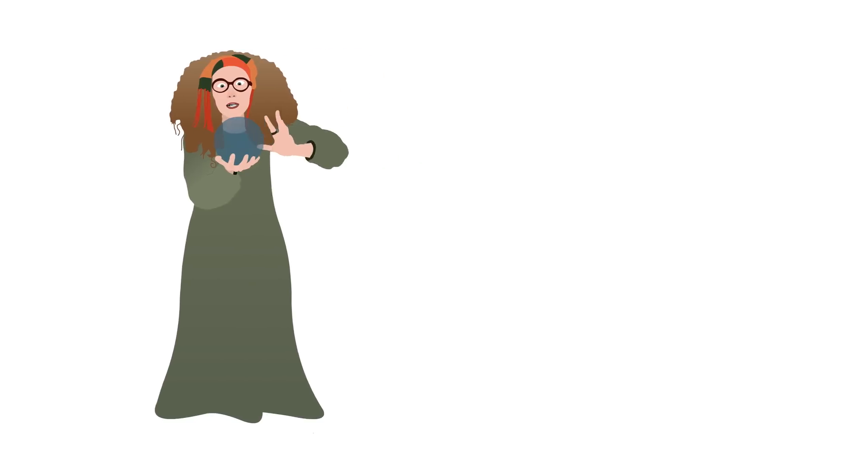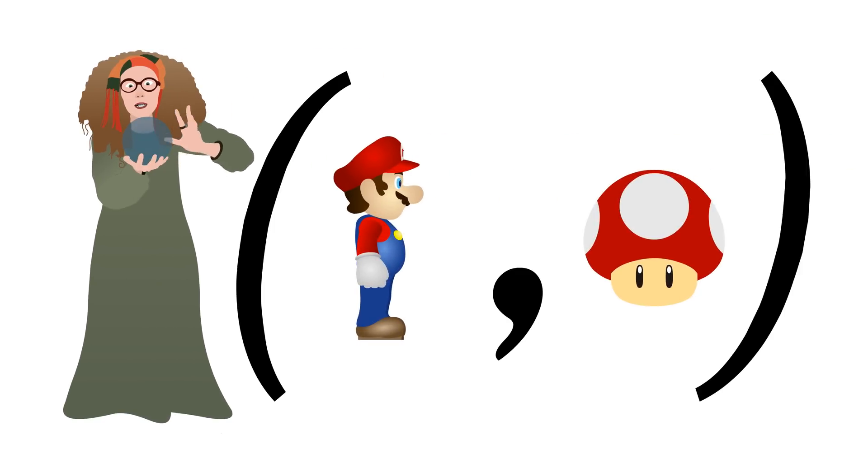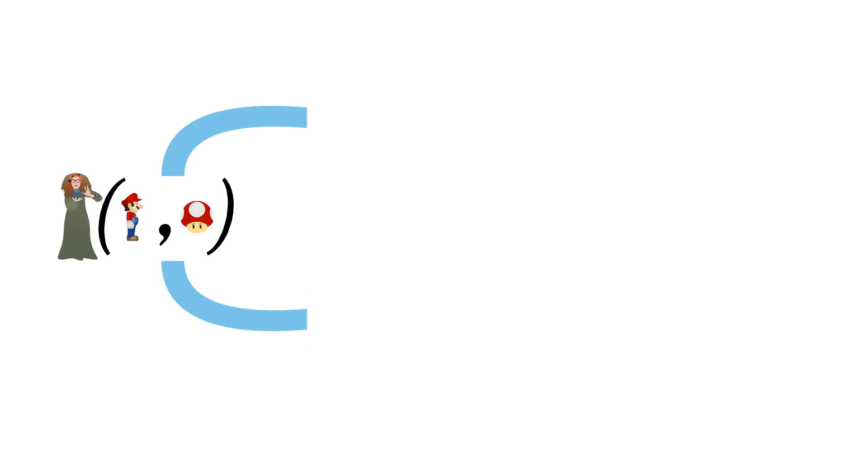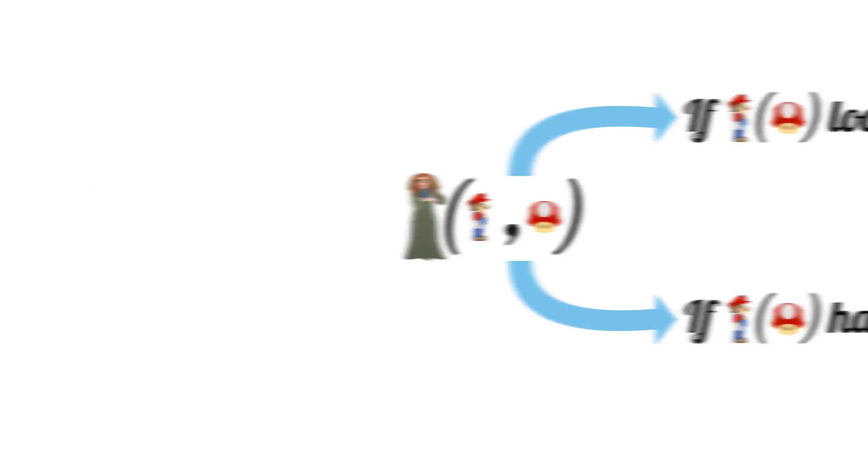As a quick reminder, we want to create a program which takes in another program M and an input X, and can tell if M loops or halts when run on X. We already know from a previous video that this is impossible, but let's try something clever and see how far we can get.